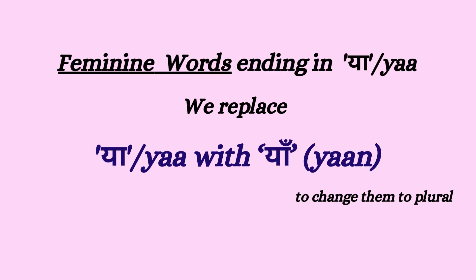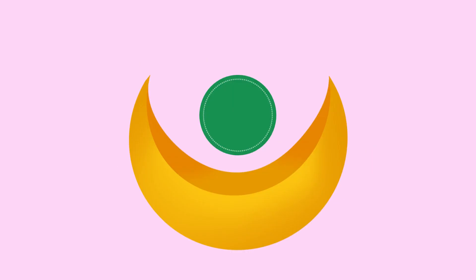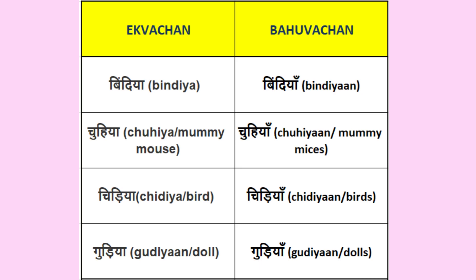Rule number 4: All feminine words which end in -ya can be changed to plural by adding a chandra bindu above the -ya. A chandra bindu means a crescent-shaped moon with a dot on top. For example: bindiya → bindiyaan, chuhiya → chuhiyaan, chidiya → chidiyaan, gudiya → gudiyaan.